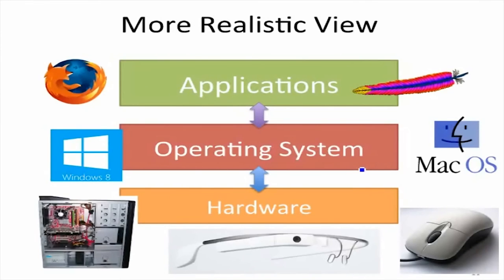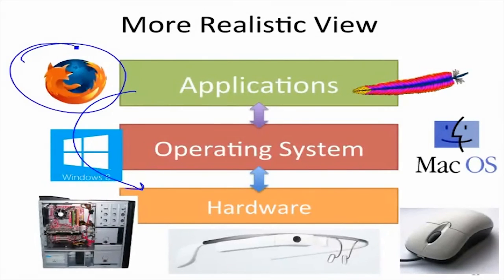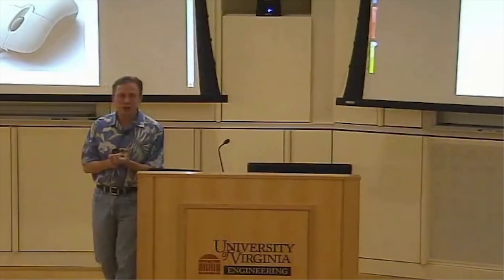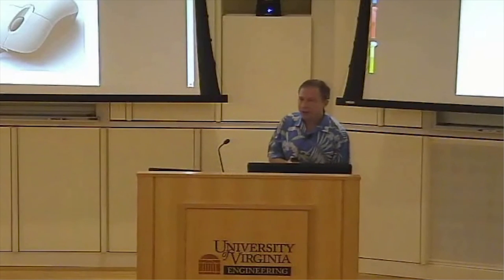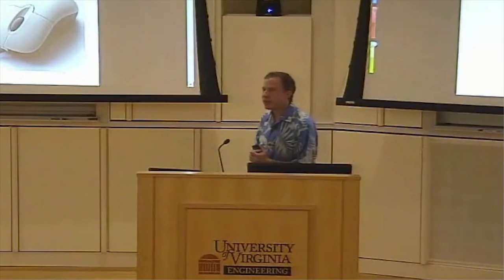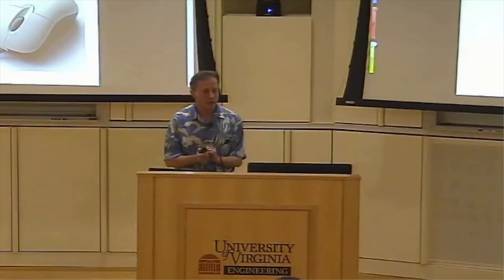The real world is a lot more complex than these simple layered views, but we can still think of the operating system as being between programs we want to run and something else. Things like a web browser are actually a platform for running programs — every web page is basically a program with code running and using resources. That web browser is acting an awful lot like an operating system rather than like an application, and most applications today have ways to run other programs inside them, so they're also becoming operating systems.